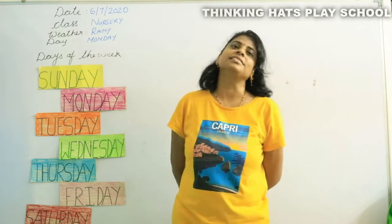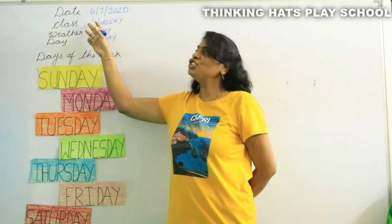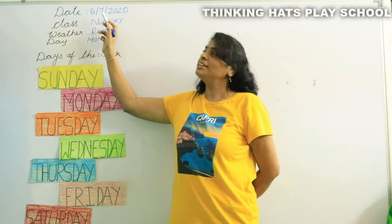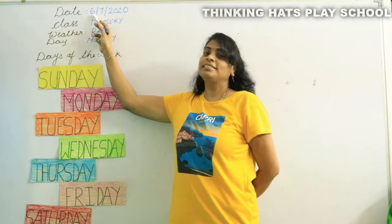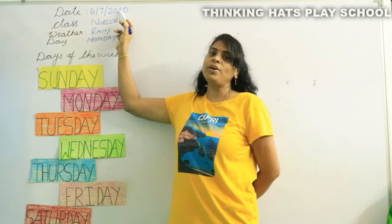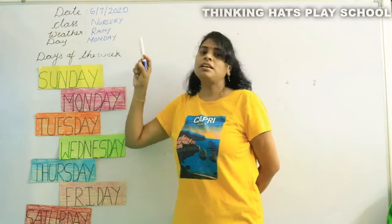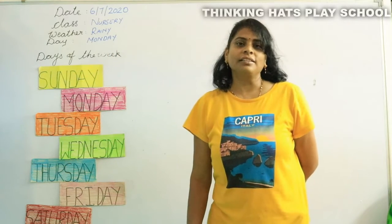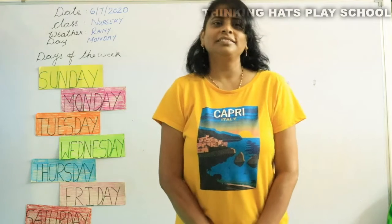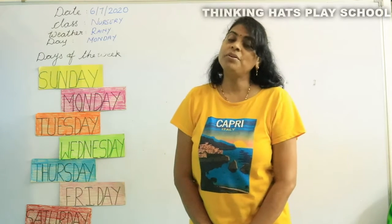And what is today's date? 6-7-2020. The 7th month means July, and the year is 2020. How is the weather outside today? Is it sunny? Is it cloudy? Is it rainy? How is the weather today?